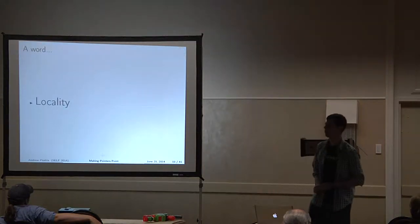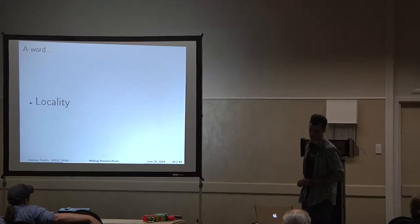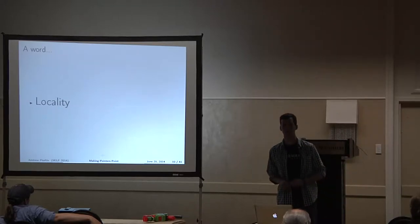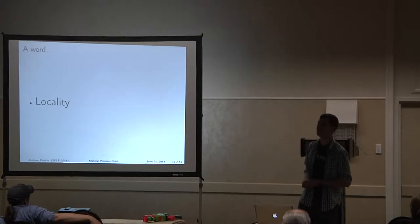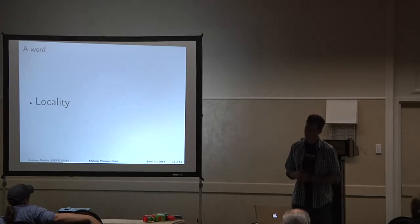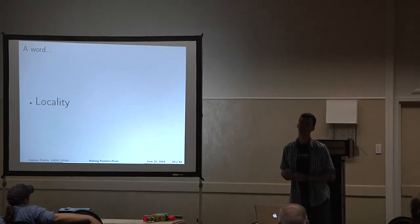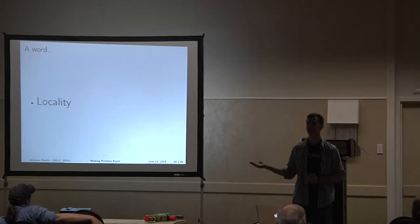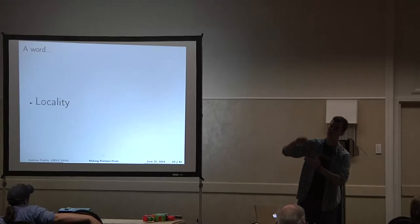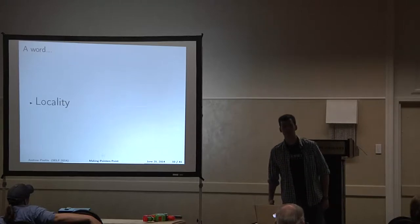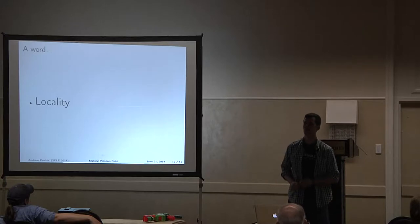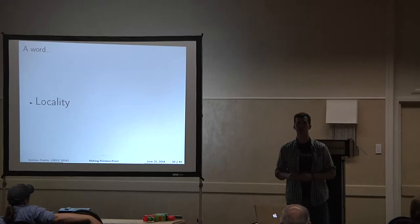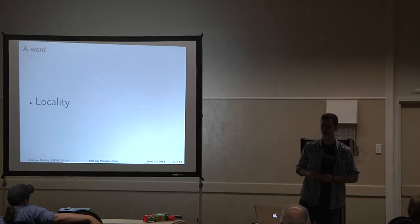Let's get down to a word here. Whenever you start dealing with the complexities of memory, you start hearing the word locality. It means that if you were to access a point in memory, you are likely to access that same point in memory again in the near future, and also the stuff around it. This makes sense — it would be useful to pull a larger chunk of stuff off disk instead of just a single piece, because you will almost certainly use the stuff around it shortly.